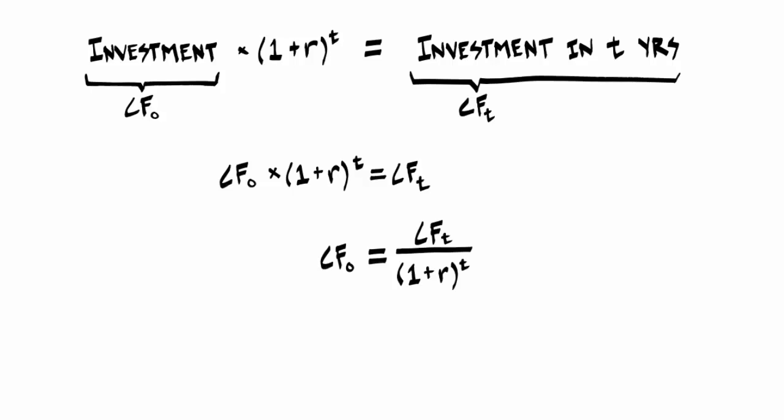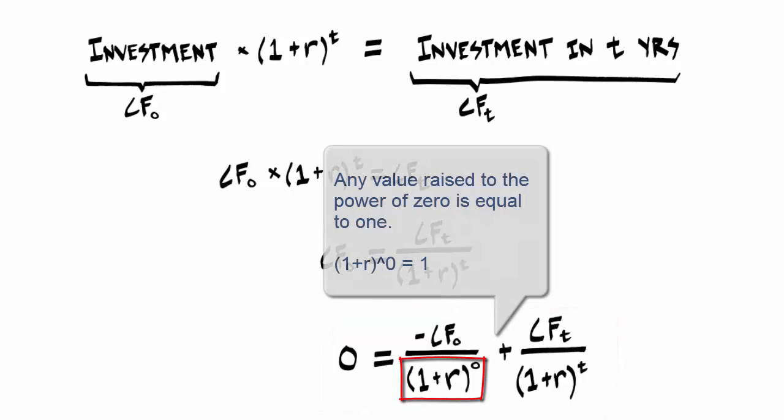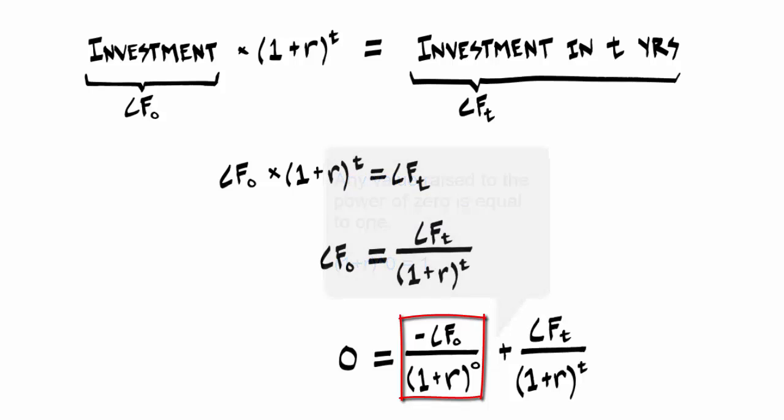Next divide both sides by 1 plus R raised to the power T, and then subtract cash flow in time period zero from both sides. And we arrive at this formula. And as a quick note for this last step, anything raised to the power of zero is equal to 1. So this quotient is really just equal to the negative value of cash flow in time period zero. Which looking back at the top, is the negative value of your investment.